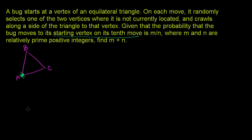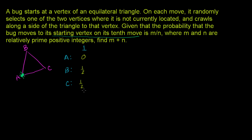Let's think about the probability of moving to one of the vertices in a given move. We'll set up a table with rows for vertices a, b, and c, and columns for each move. On move one, the probability of moving to vertex a is zero — you're already at vertex a and the bug always goes to one of the other two vertices. The probability of moving to vertex b is one half, and the probability of moving to vertex c is one half. All probabilities add up to one.